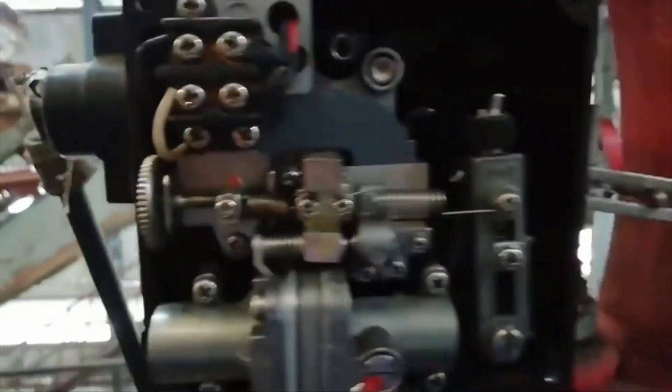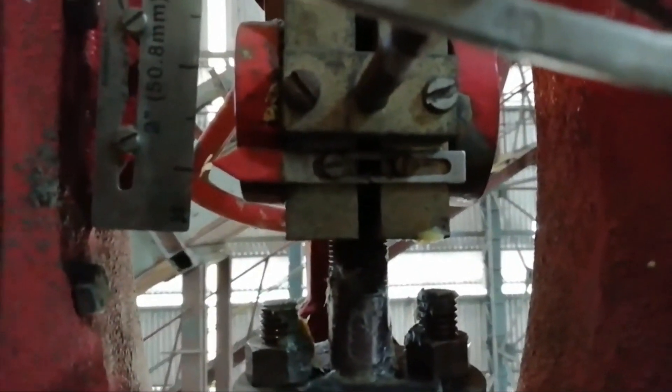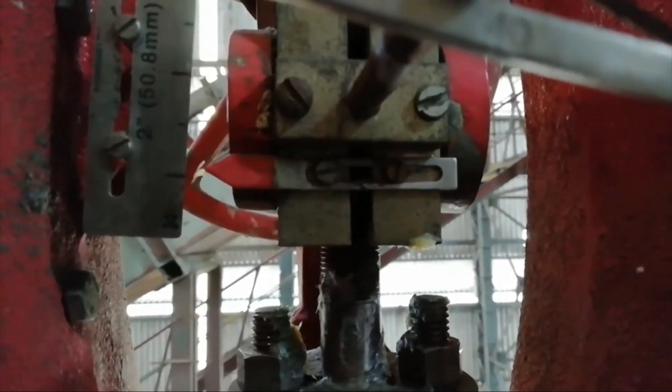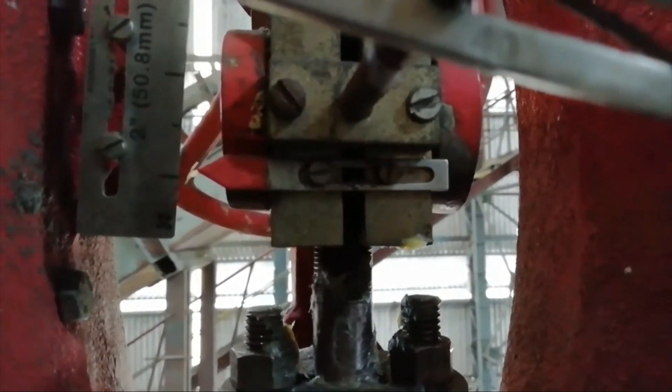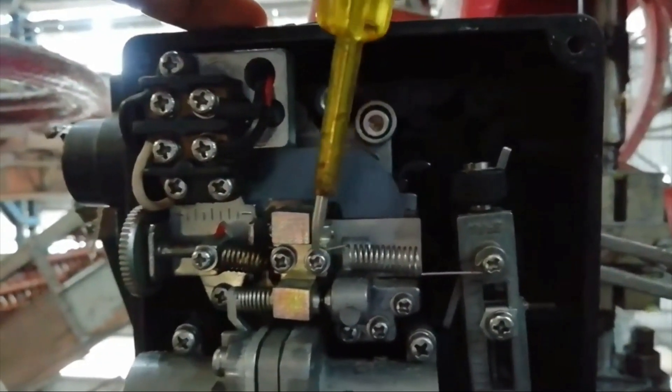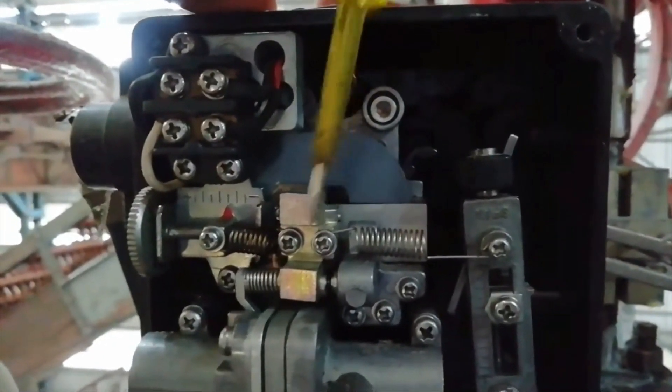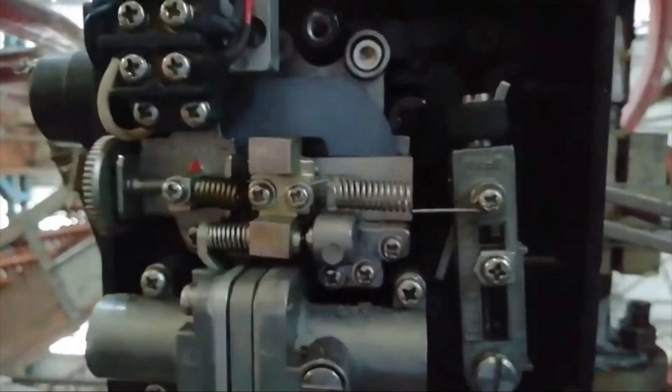Thus the calibrating process of pneumatic control valve is over. Next, ramp up and down the valve's travel using 4, 8, 12, 16, and 20 milliamps.